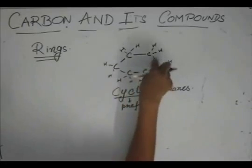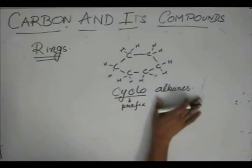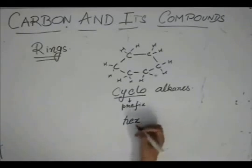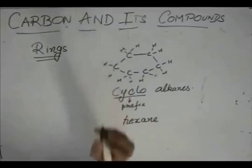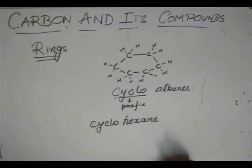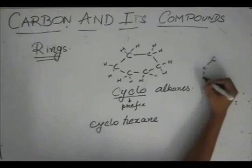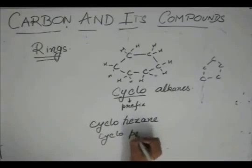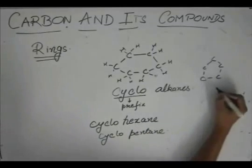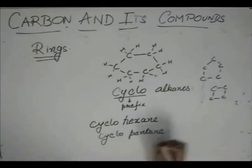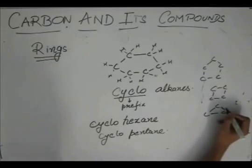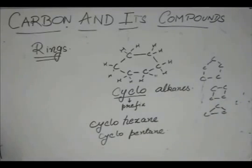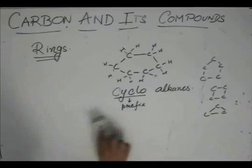So this has six carbons and it has no double bonds. So it is a cycloalkane. And since it has six carbons, if you remember, the prefix for six was hex. So it is hexane, but since it is in a cycle, it's called cyclohexane. And similarly if you have five carbons and the hydrogens, of course, it will be cyclopentane. You have cyclobutane. This is cyclopropane. You don't have cycloethane and cyclomethane, of course, because you need at least three carbon atoms to form a ring sort of structure.